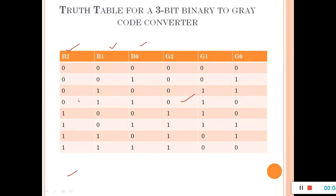B2 is kept as G2. Then XOR-ing B2 and B1: zero XOR one gives one. Remember: zero XOR zero gives zero, one XOR one gives zero, but one XOR zero gives one. Then take B1 which is one and B0 which is one, and XOR-ing gives zero — same bits produce zero, different bits produce one. Similarly, we can convert any binary bits into gray code.